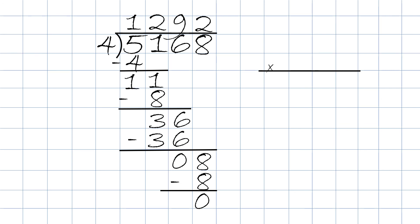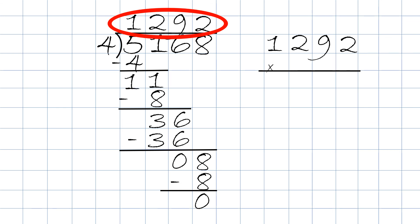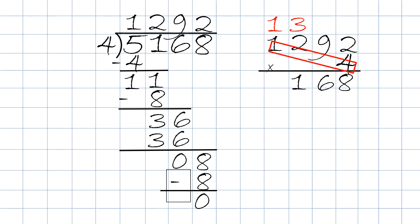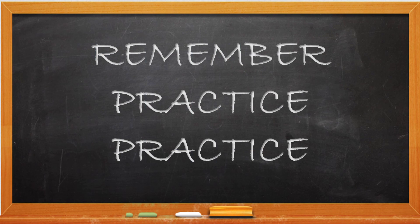Now, to excel in math, we always double check — if not triple check our work. You could take the calculator and type in the numbers, or do it manually. We take the quotient 1,292 and multiply it by the divisor 4. So 2 times 4 will be 8. 9 times 4 will be 36 — put the 6 on the bottom, carry the 3 on top of the 2. 4 times 2 will be 8, plus 3 will be 11 — put down 1 on the bottom, bring the 1 over. And 4 times 1 will be 4, plus 1 will be 5. The answers match: 5,168.